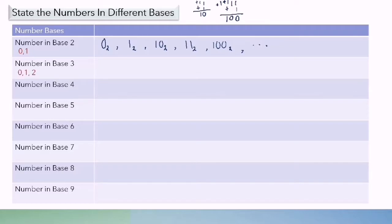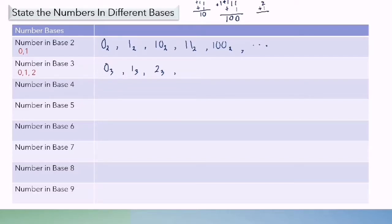For number in base 3, we have digits 0, 1, and 2. If I write it in sequence: 0 base 3, 1 base 3, 2 base 3. Then we cannot have the number 3, so 2 plus 1 is full already for base 3. So put 0 and add 1 to the front. We get 1, 0 base 3, then 1, 1 base 3, and so on.